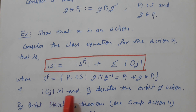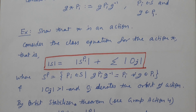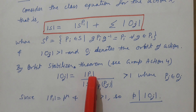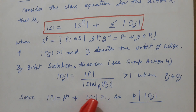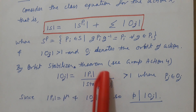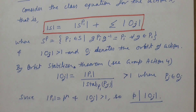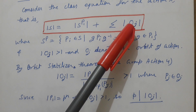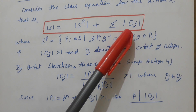By the orbit-stabilizer theorem, |O_j| = |P1| / |stabilizer of Pj in P1|. Since |O_j| > 1 and |P1| = p^n, p must divide each |O_j|, so p divides the entire summation.